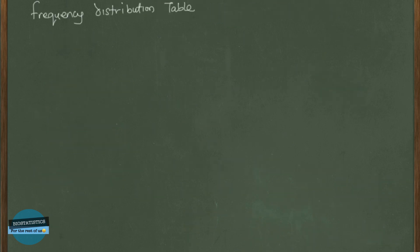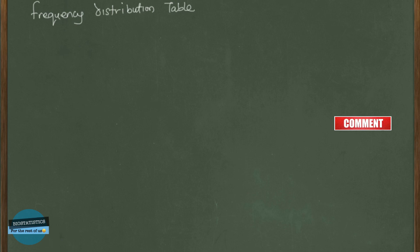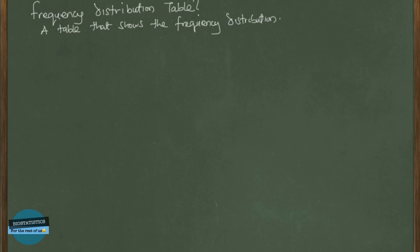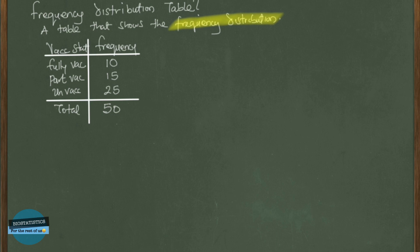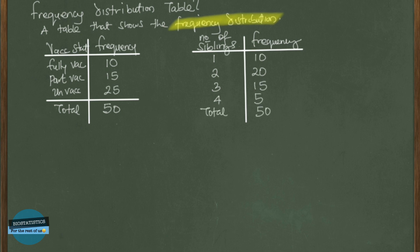Now we can talk about what is a frequency distribution table. Because the frequency distribution is not something that can easily be understood unless it's put in a table, when you take the frequency distribution and put it in a table, you get what we call the frequency distribution table. For vaccination status, we draw the table with vaccine status on one side and frequency on the other: fully vaccinated 10, partially vaccinated 15, unvaccinated 25, giving a total of 50. We can also draw the same for number of siblings.